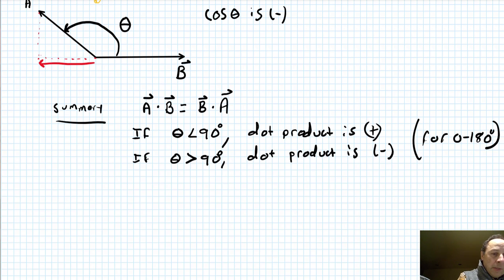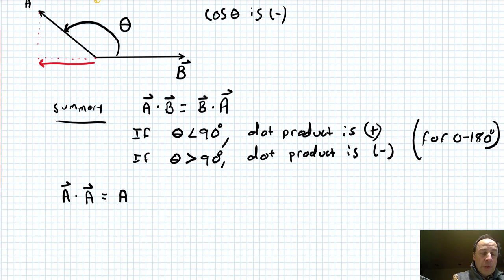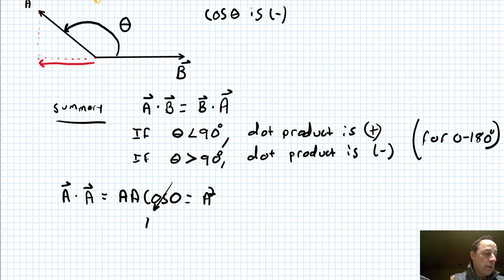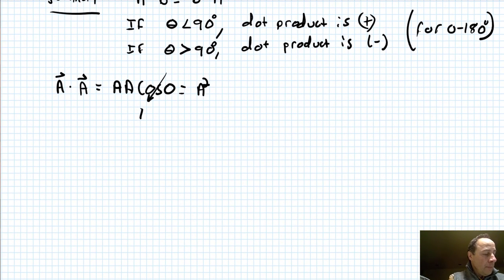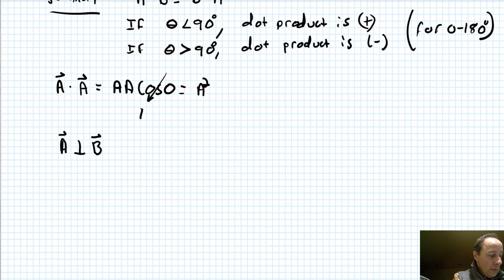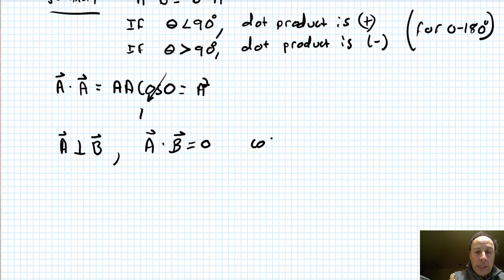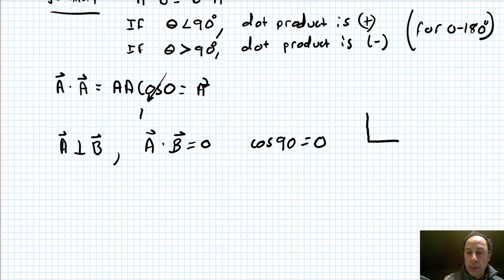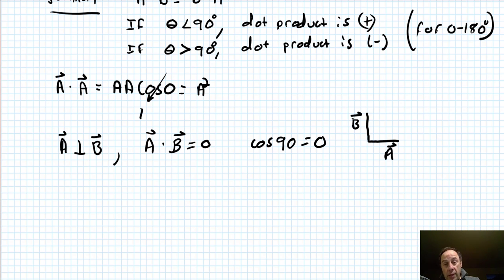A couple more things. The vector A dotted with itself: following our rules, that gives the magnitude of A times the magnitude of A times cosine of 0, which equals 1 — so it's just the magnitude of A squared. On the other hand, if A is perpendicular to vector B, then A·B equals 0 because cos 90 equals 0. There's no component of A in the direction of B or B in the direction of A when they are perpendicular.